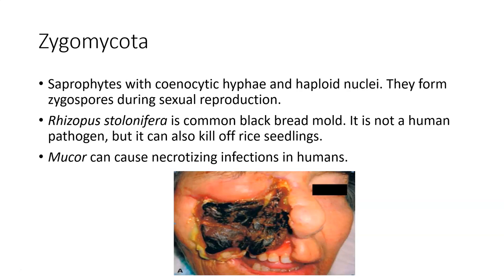Zygomycota is again where you have common black bread mold, which isn't a huge problem for people except that it causes food spoilage and wastes money. But Mucor is also in this group. If you've never heard of necrotizing fasciitis — what normal people would call flesh-eating disease — it's not just a bacterial infection; there is also a fungal flesh-eating disease.